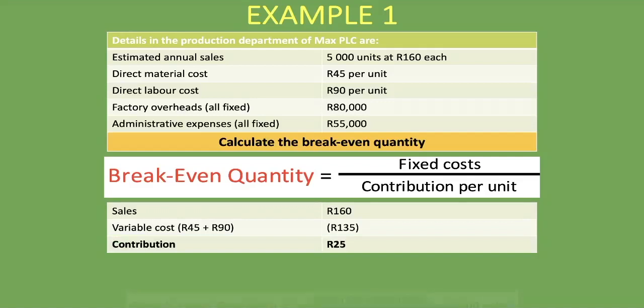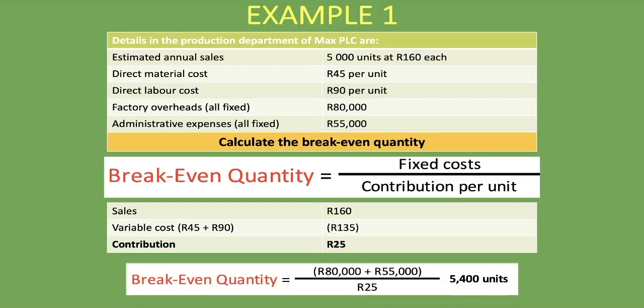We take our fixed costs — 80,000 rand plus 55,000 rand — divided by the contribution per unit of 25 rand, and it gives us an answer of 5,400 units. This means that if Max PLC is to sell 5,400 units, it will neither make a loss nor a profit. That is what break-even means, and that is why you calculate it — you want to know the bare minimum number of units you need to sell, which in this case is 5,400 units.